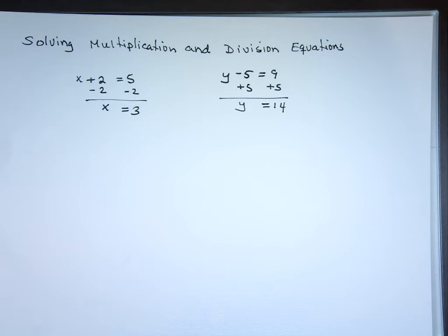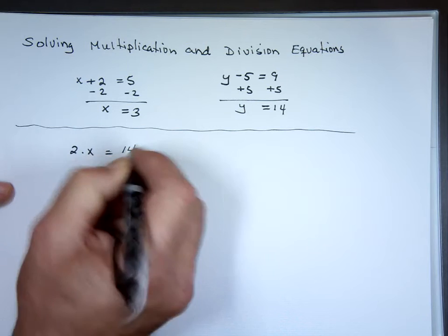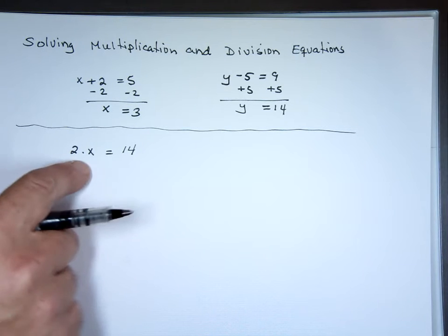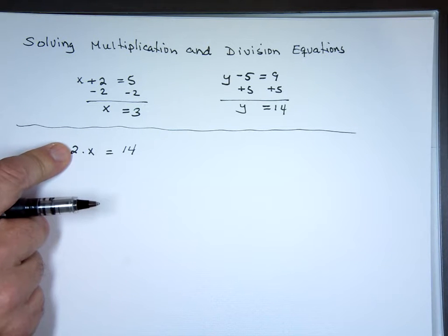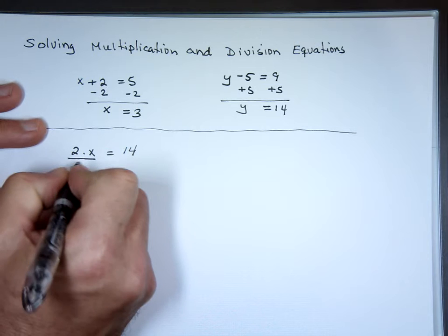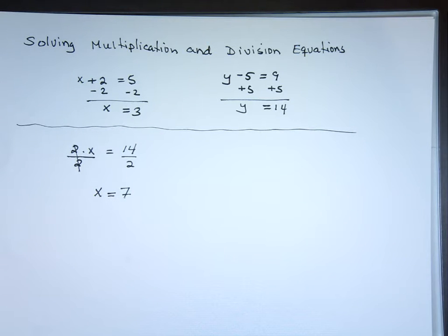So what about multiplication and division now? It's like if you have 2 times x equals 14. Think about this, 2 times what is 14? Seven. How do you get 7 out of 14 and 2? To get 7 out of 14 and 2, you have to divide 14 by 2. So when you have multiplication, the opposite is always division. x equals 7. If you have division, you always want to multiply.